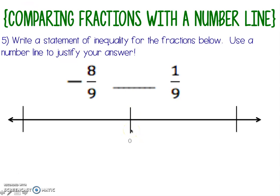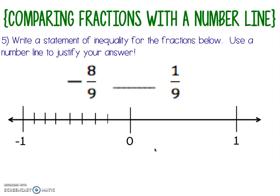I'm always going to mark that zero right there in the middle, because it tells me that the positives are over here and my negatives are over there. So here's my negative one and here's my positive one. It might be helpful to draw your whole number lines a little bit longer than your fractional marks. If we're going to break our number line into ninths, we're going to need eight tick marks to create nine spaces, and remember that they need to be evenly spaced.